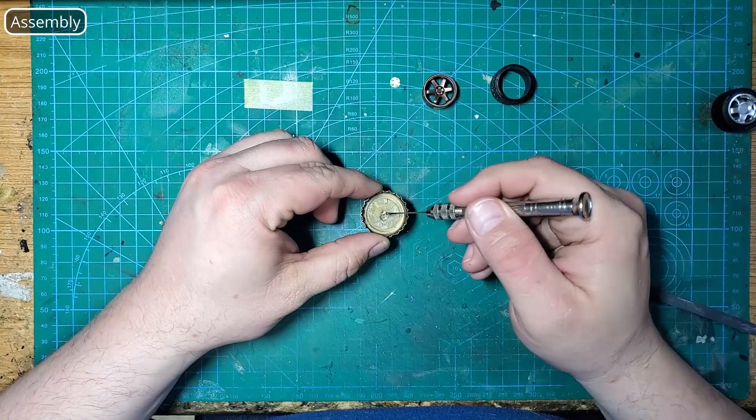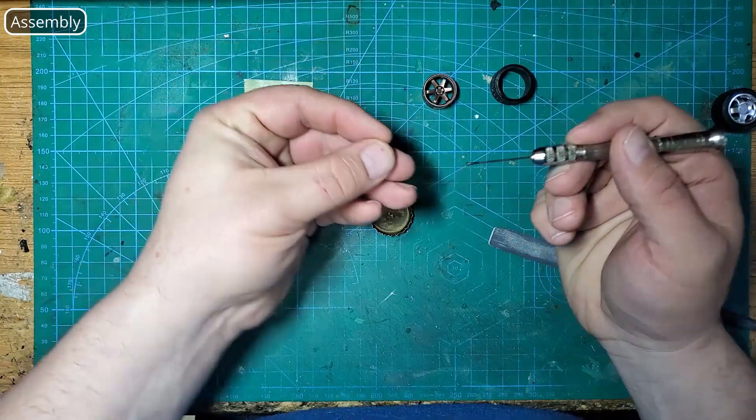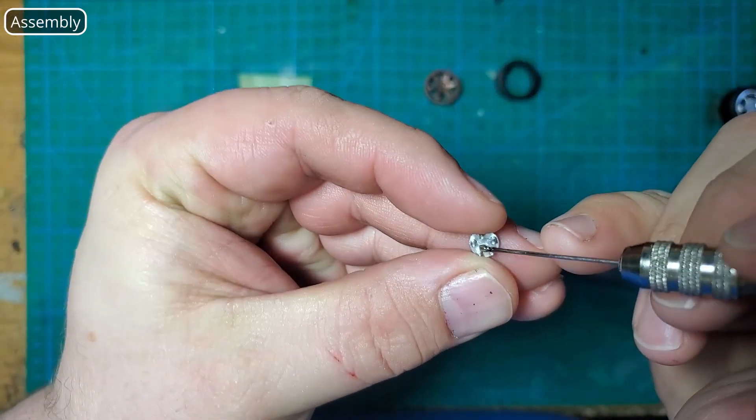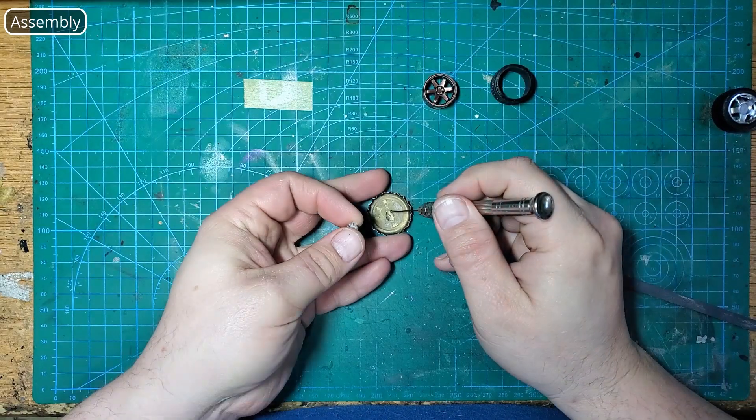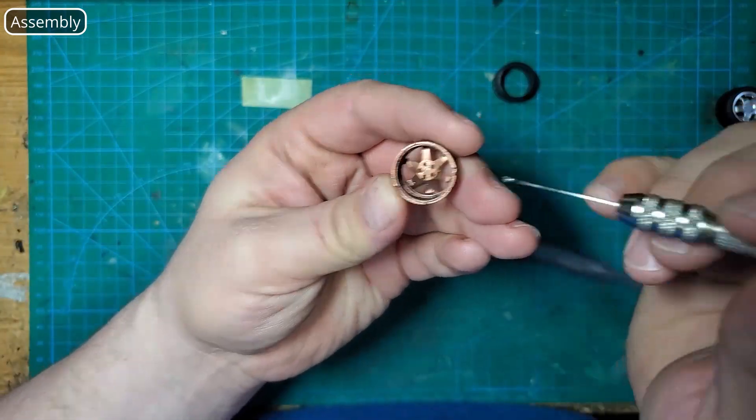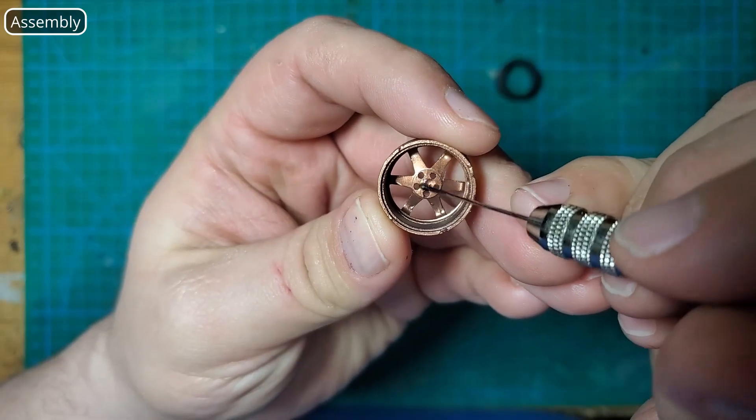Moving on to the wheel assembly we're going to start by gluing the lug nuts into the wheels. I'm just going to apply some super glue to both the lug nut and to the back side of the wheel. Then I'm going to use some blue tack to hold the lug nuts and make it easier to just press them home.